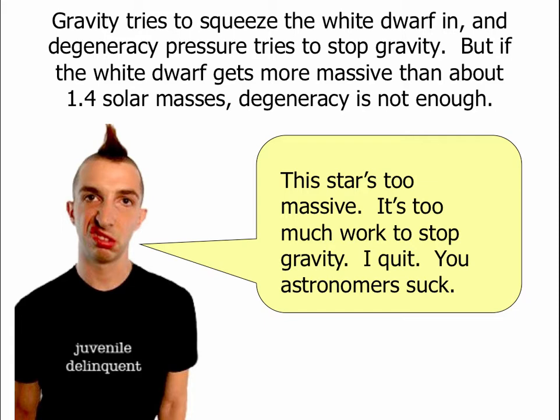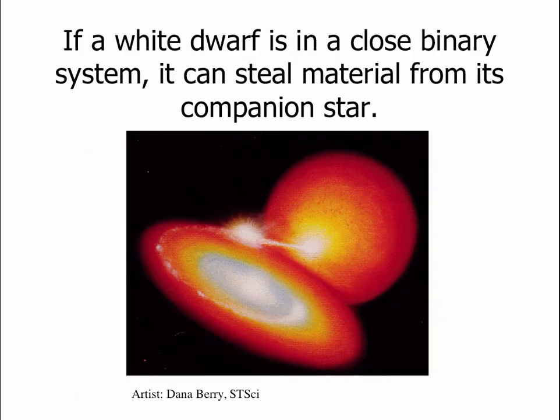However, if your white dwarf somehow gets above about 1.4 solar masses, then the pull of gravity will be too strong and degeneracy pressure will not be able to stop the pull of gravity and gravity will squeeze the star inwards. Where can a white dwarf get extra material? Because our sun is going to be a white dwarf about 0.6 times the mass of the sun. This limit is 1.4 times the mass of the sun. The sun's white dwarf is nowhere close to being able to reach this limit.